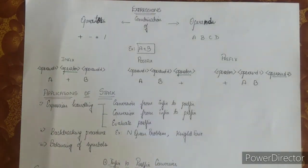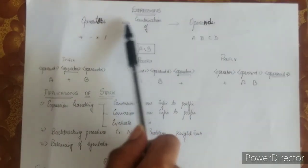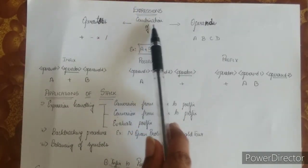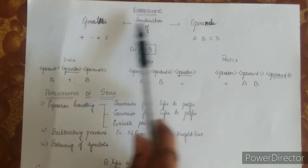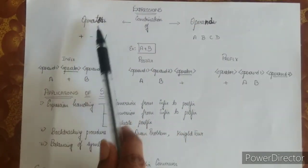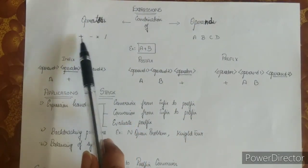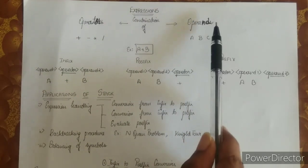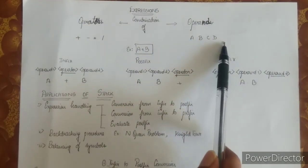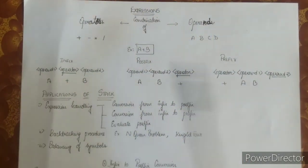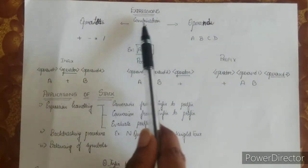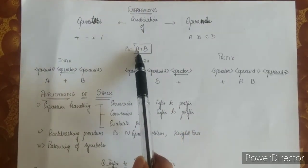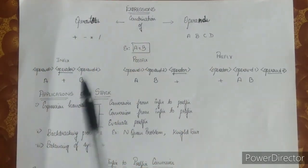So without much ado, let's see what are expressions. An expression is a combination of operators and operands. Operators such as the plus, minus, multiplication, and division operators. Operands such as a, b, c, d, etc. A combination of these two will make an expression. A simple example would be a plus b.